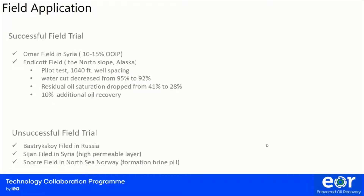There are also field applications of low salinity water injection. Successful field trials include the Omar field in Syria, reporting 10 to 15 percent original oil in place recovery. BP piloted this method in the Endicott field on the North Slope, Alaska, where they observed a moderate decrease in water cut from 95% to 92% and a significant residual oil saturation drop from 41% to 28%, resulting in 10% additional oil recovery. In contrast, some unsuccessful field trials in Russia, Syria, and Norway showed insignificant response, related to geological complexity or highly saline aquifers mixing with the injected low salinity water.